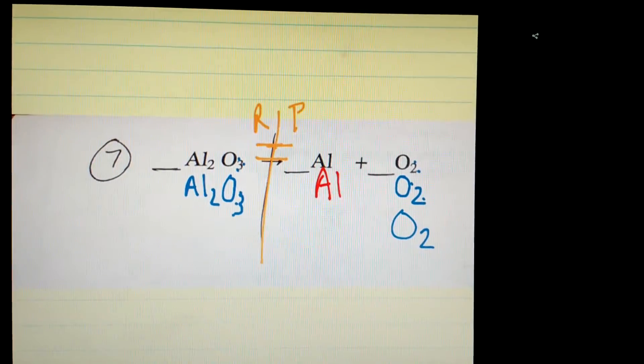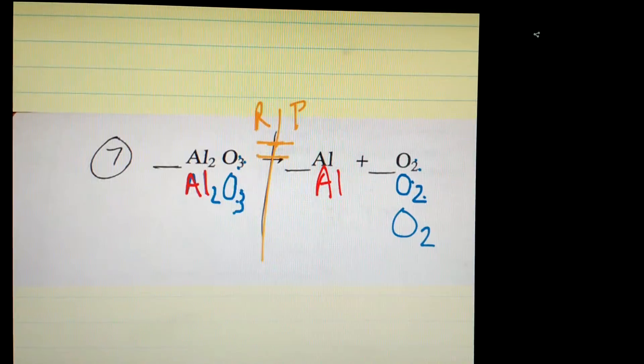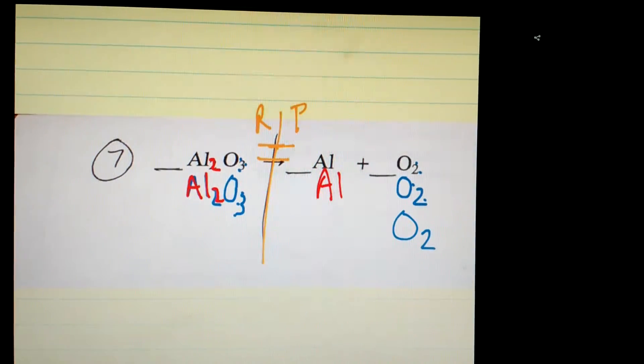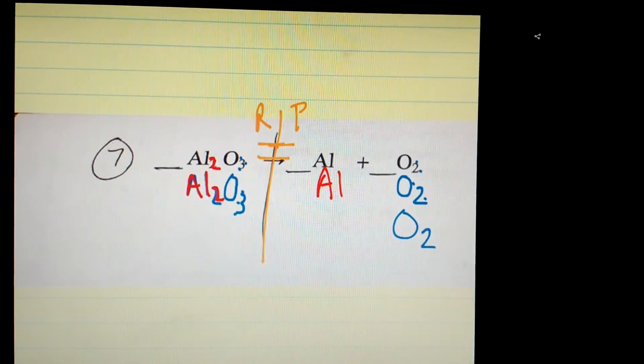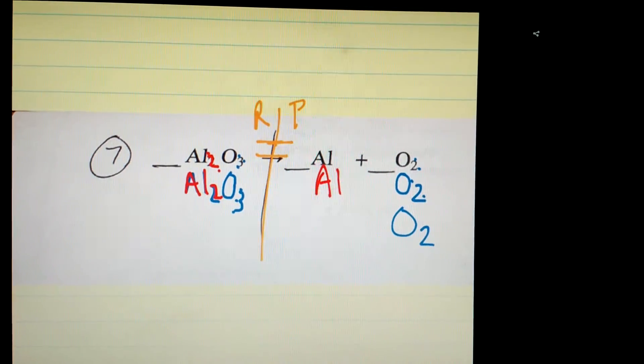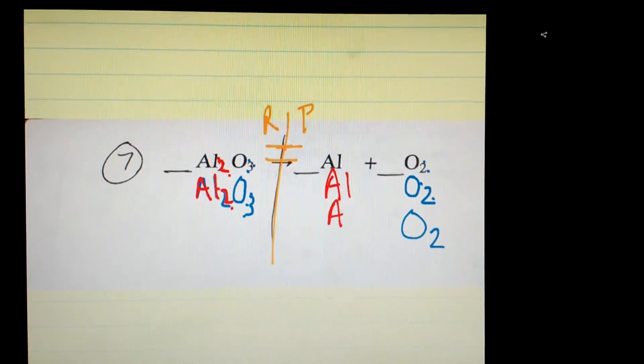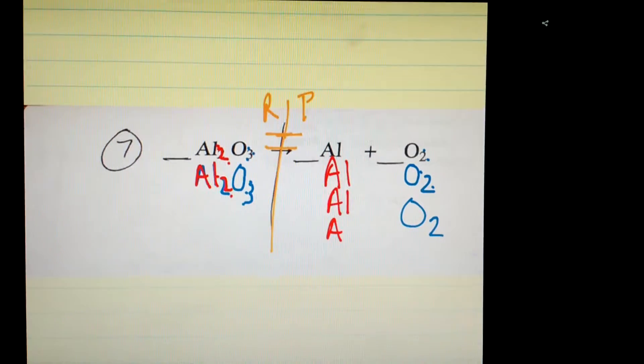Now if we take a look at our aluminums, we're noticing there are a total of how many aluminums on the reactant side? Four, that's correct. One, two, three, four. The product side needs to have four aluminums as well.